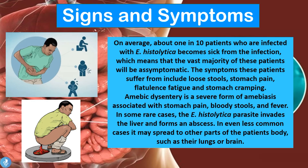On average, about 1 in 10 patients infected with Entamoeba histolytica becomes sick from the infection, meaning the vast majority are asymptomatic. Symptoms include loose stools, stomach pain, flatulence, fatigue, and stomach cramping. Amoebic dysentery is a severe form of amoebiasis associated with stomach pain, bloody stools, and fever. In some rare cases the parasite will invade the liver to form an abscess, and in even less common cases it may spread to the lungs or brain, causing abscesses there as well.